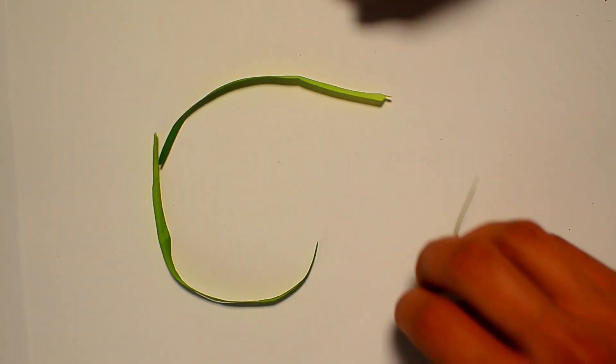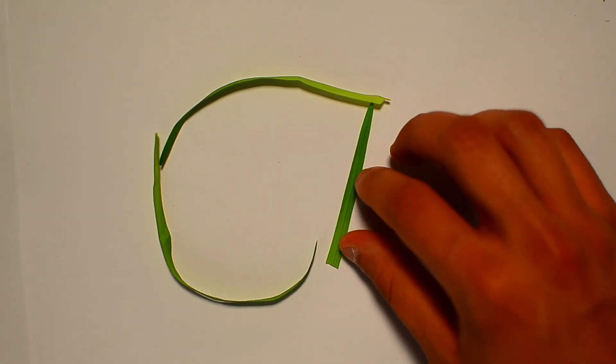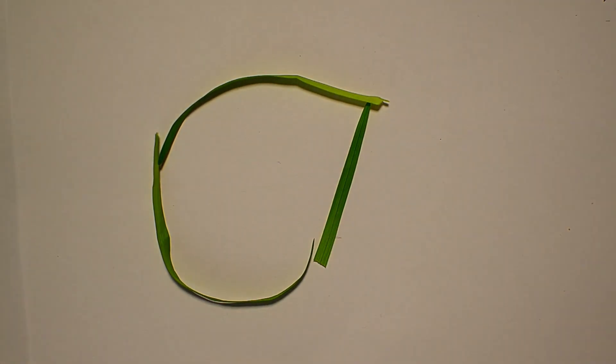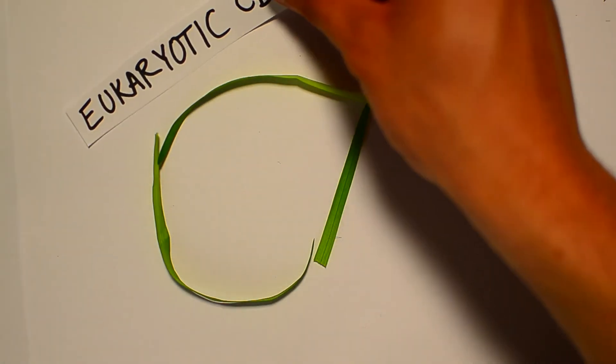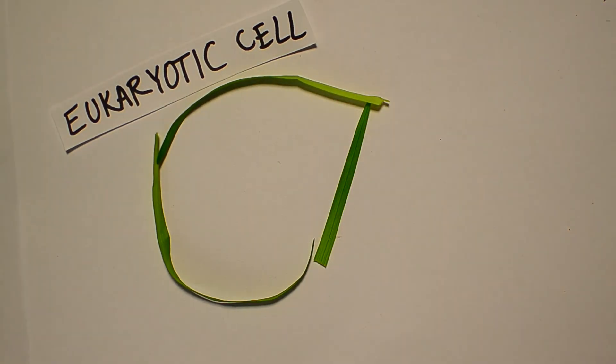The cell membrane is represented here by strands of grass. This phospholipid bilayer is essential in separating the interior of the cell from the outside environment. It is selectively permeable. This means the cell is able to control what comes and goes across the membrane.